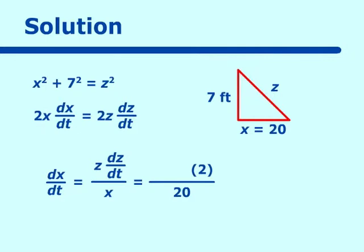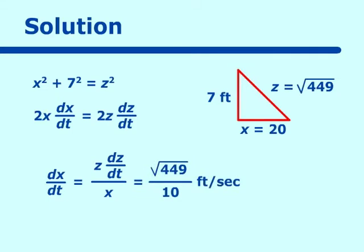We have a right triangle with two sides known and one side not known. Using the Pythagorean theorem, we find z is equal to the square root of 449. Filling that in, the answer simplifies to the square root of 449 over 10 feet per second, which in decimal form is 2.119 feet per second. That is a right triangle problem.